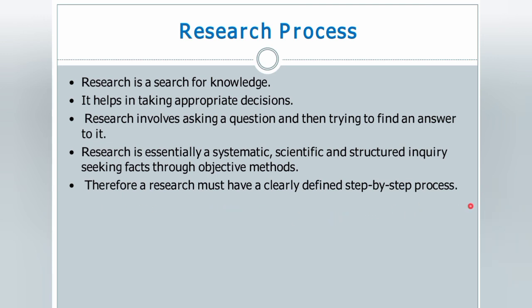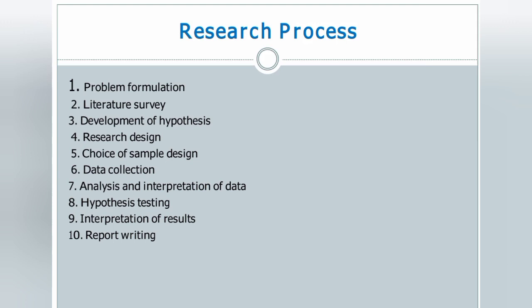A research must have a clearly defined step-by-step process. There are ten steps for the research process: problem formulation, literature survey, development of hypothesis, research design, choice of sample design, data collection, analysis and interpretation of data, hypothesis testing, interpretation of results, and report writing. These are the different stages to reach the solution for the taken problem statement.